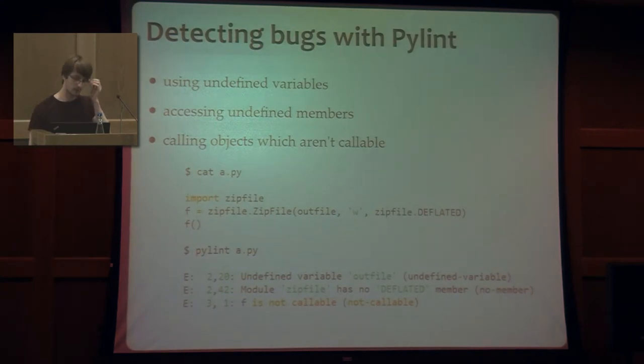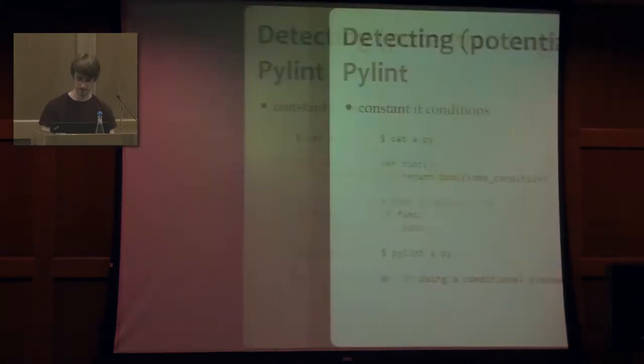It can detect even more critical bugs that can actually crash your code. Like in this example, where I'm using a variable which is not defined, outfile. And I'm trying to call an instance which can't be called, an instance of a zipfile. And the same thing happens, is that PyLint tells me about all these errors that are in my code, and I can go there and start fixing them.